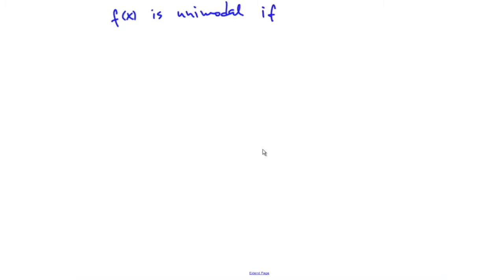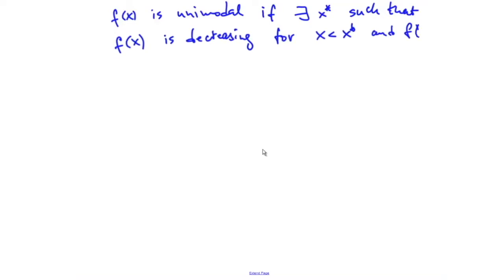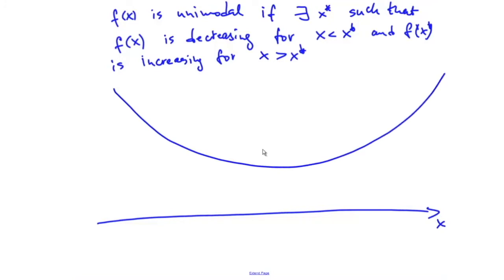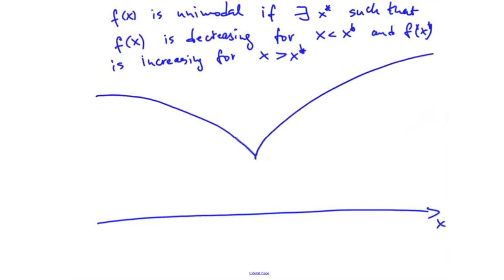We'll consider a very special case: a function that we call unimodal. f(x) is unimodal if there exists some point x* such that f(x) is decreasing for x less than x*, and f(x) is increasing for x greater than x*. Of course, x* will be the minimizer. It doesn't have to be convex. We consider an interval [a, b] on which we assume the minimizer is contained.